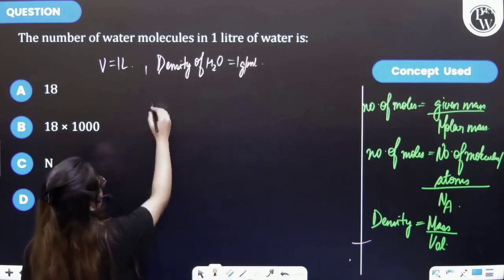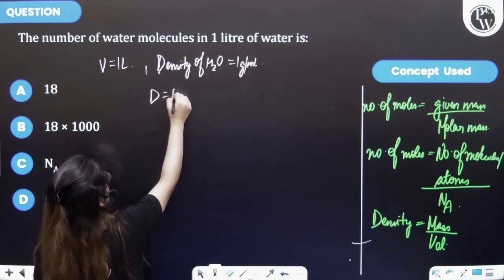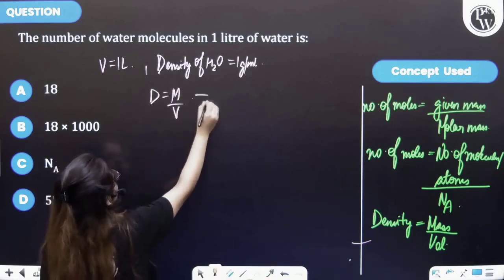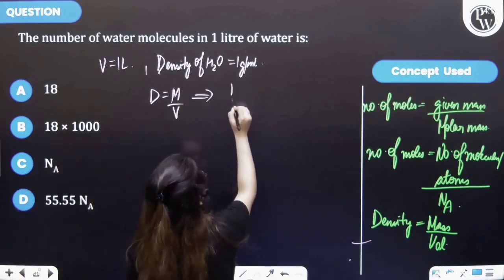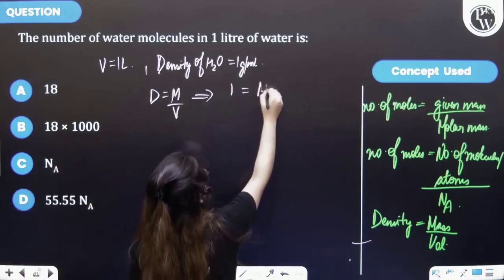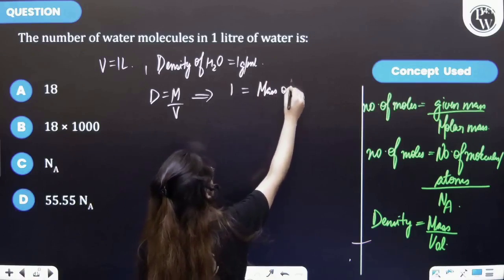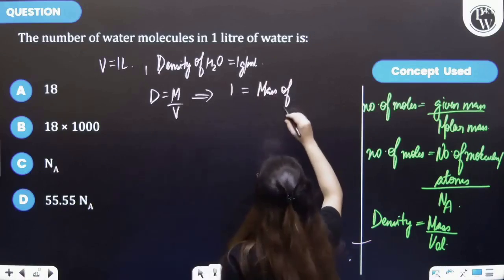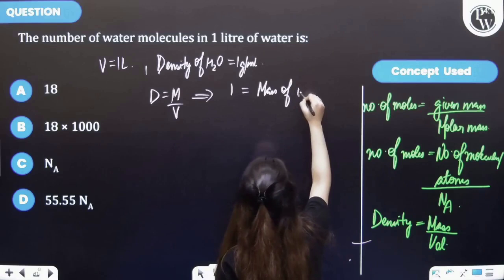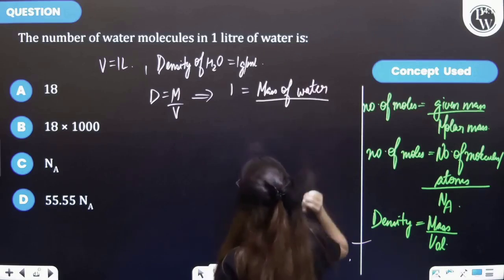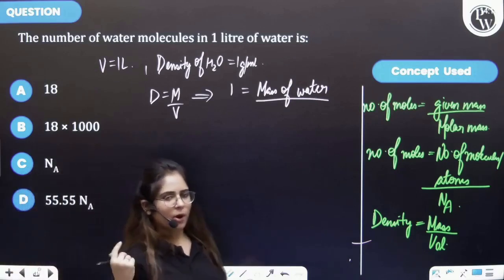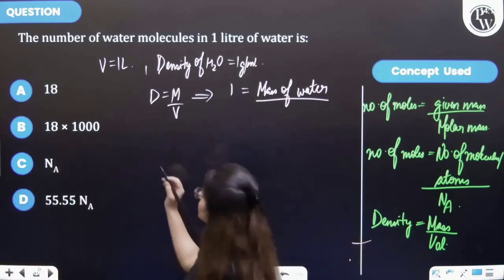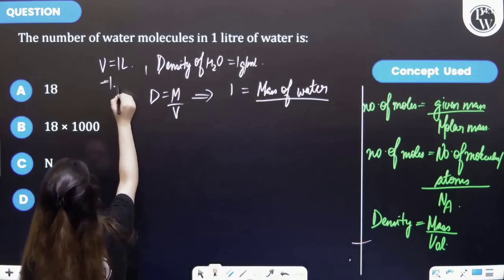Now by using this formula, density is equal to mass by volume. So density is 1 gram per ml. Mass we have to find out - mass of water. And then volume is 1 liter, but we are talking about ml. So 1 liter water is equal to 1000 ml.